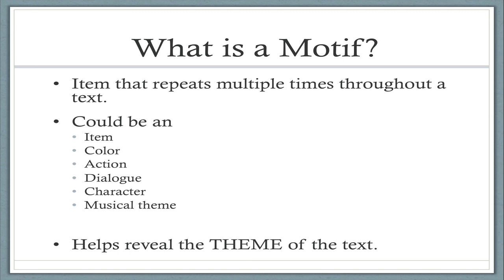So what is a motif? A motif is an item that repeats multiple times throughout a text. And just like any of these terms, while we are focusing on them at the film level, these are definitely true of any piece of literature as well. That item could be an actual physical item — a thing, an object, a shell, a book, an airplane — something tangible. But a motif could also be something like a recurring color.